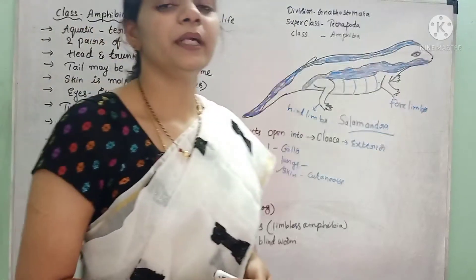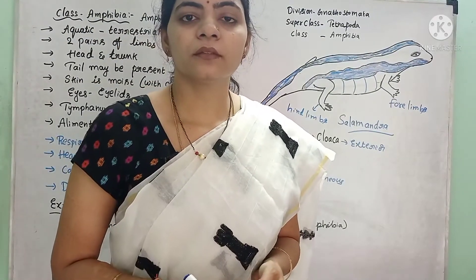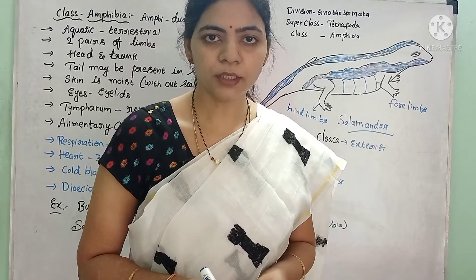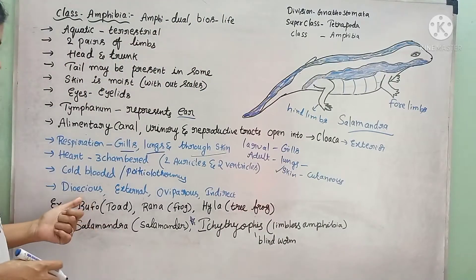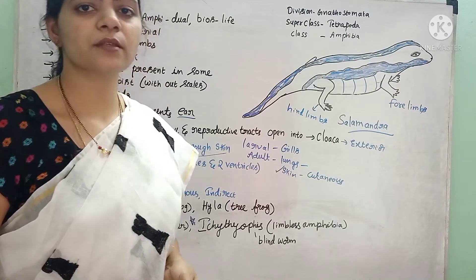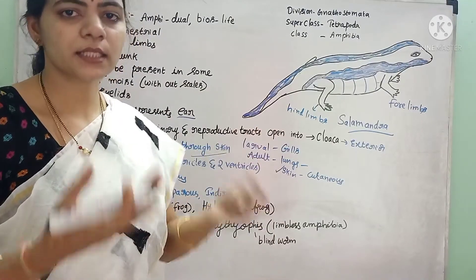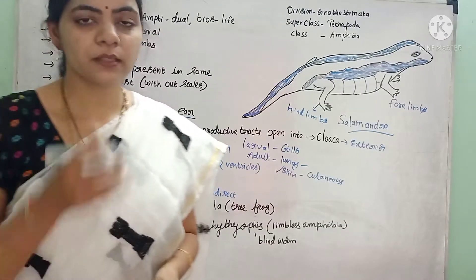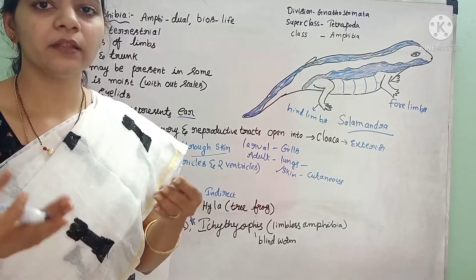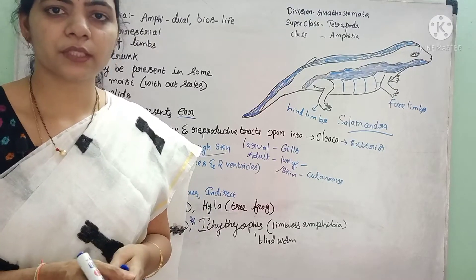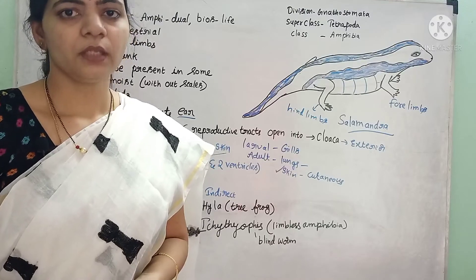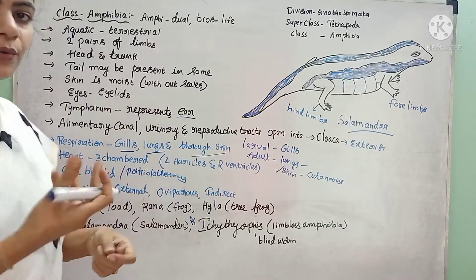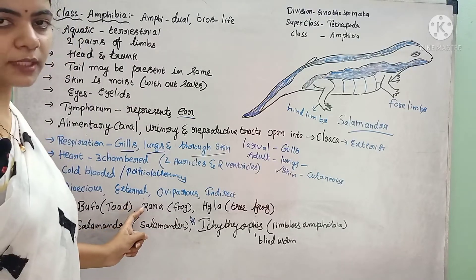Being cold-blooded means they do not have the capability to change their body temperature according to the external environment. Hence they are called poikilotherm animals. These are dioecious, meaning male and female animals are separate. The fertilization is external — the male and female during reproductive time release their gametes into the water, where sperms and eggs fuse and fertilization takes place outside the body of the female.